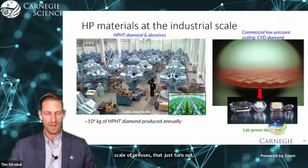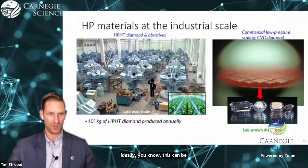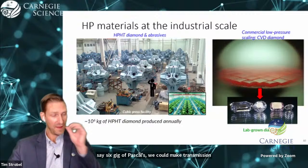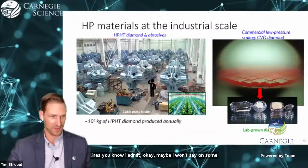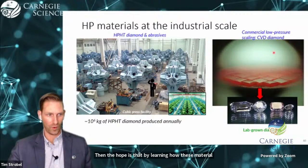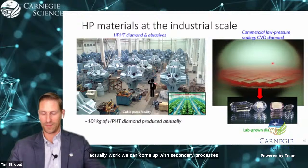Ideally, if you have a material that we can get down to 6 gigapascals, we could make transmission lines on some scale, maybe not to supply all of the world's transmission lines. Then the hope is that by learning how these materials actually work, we can come up with secondary processes that don't require as much pressure.